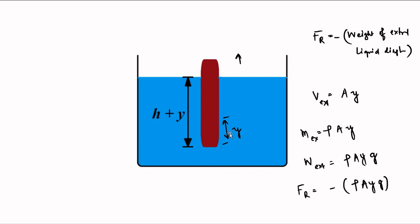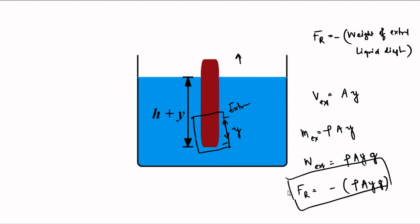The restoring force acts in the opposite direction of the extra displacement y. The extra volume created is A times y, the mass of the extra displaced liquid is rho A y, and the weight is rho A y g. The restoring force is in the opposite direction of the displacement — that's why there is a negative sign. This means the cylinder will execute simple harmonic motion.